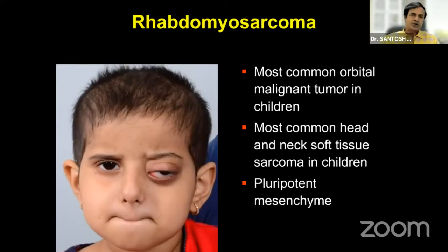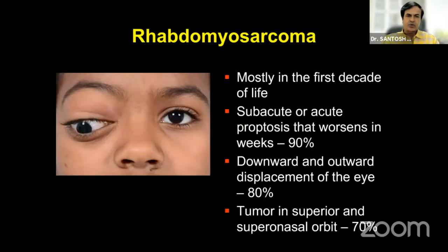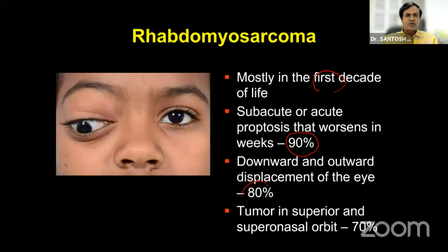I'll be talking about orbital rhabdomyosarcoma, which is the most common primary malignant orbital tumor in children and the most common head and neck soft tissue sarcoma. It arises from the pluripotent mesenchyme and is generally seen in the first decade of life. It presents mainly with subacute proptosis that worsens in weeks, not in days — that is the common presentation in about 90% of children in our series — with downward and outward displacement of the eye, because the tumor is generally located in the superior, slightly towards the supramedial aspect, in about 70%.